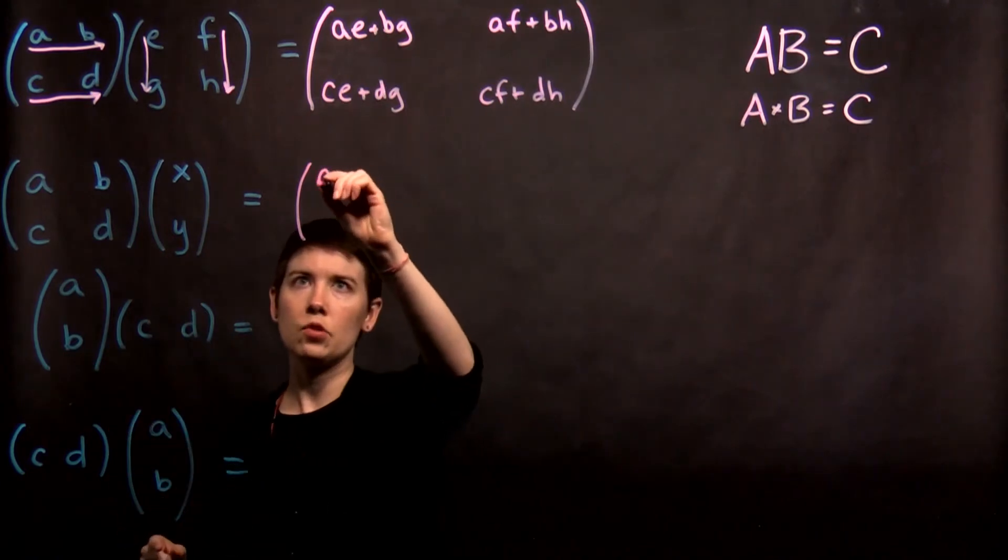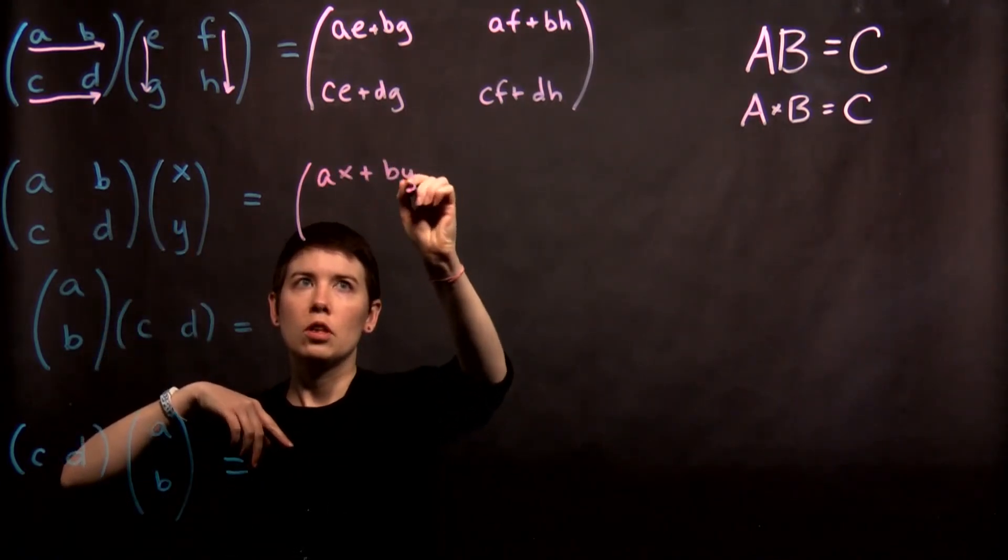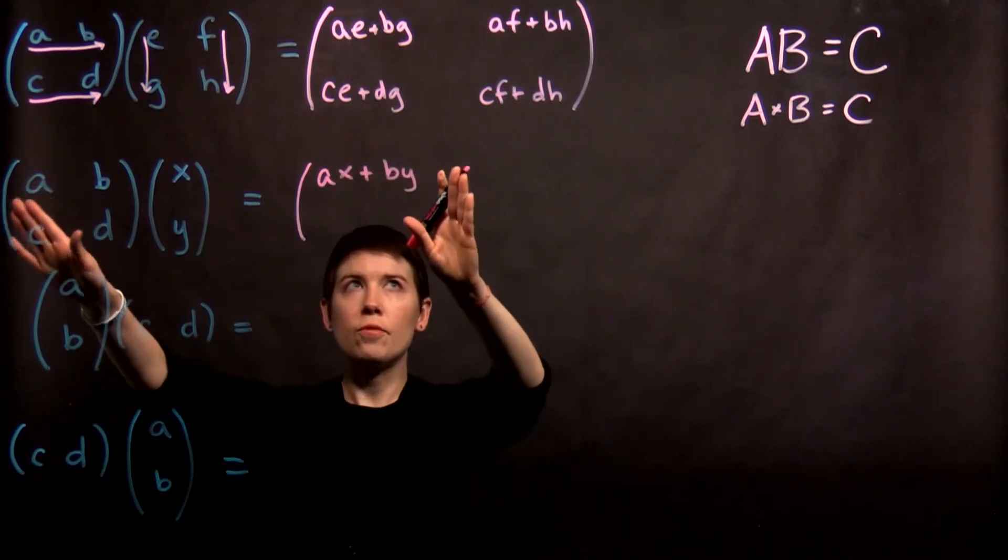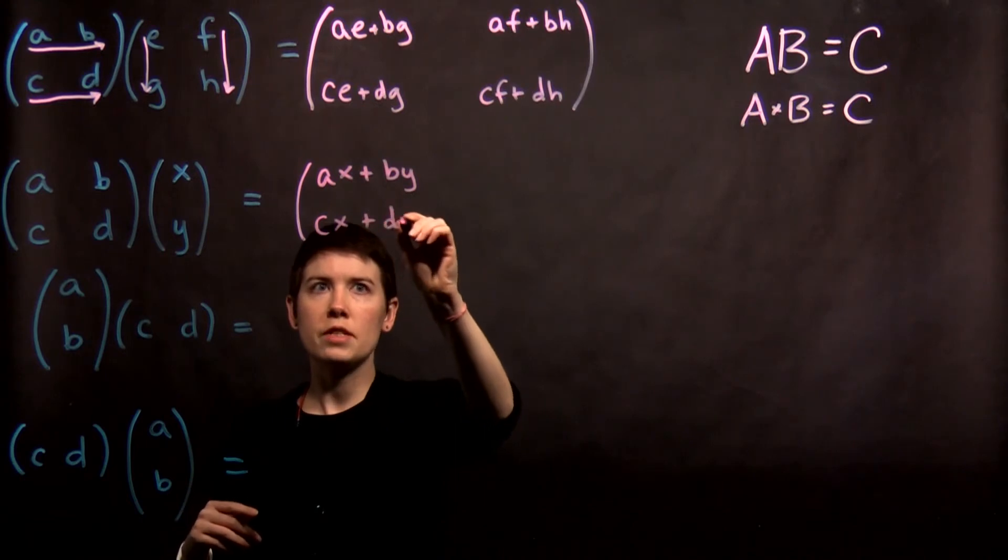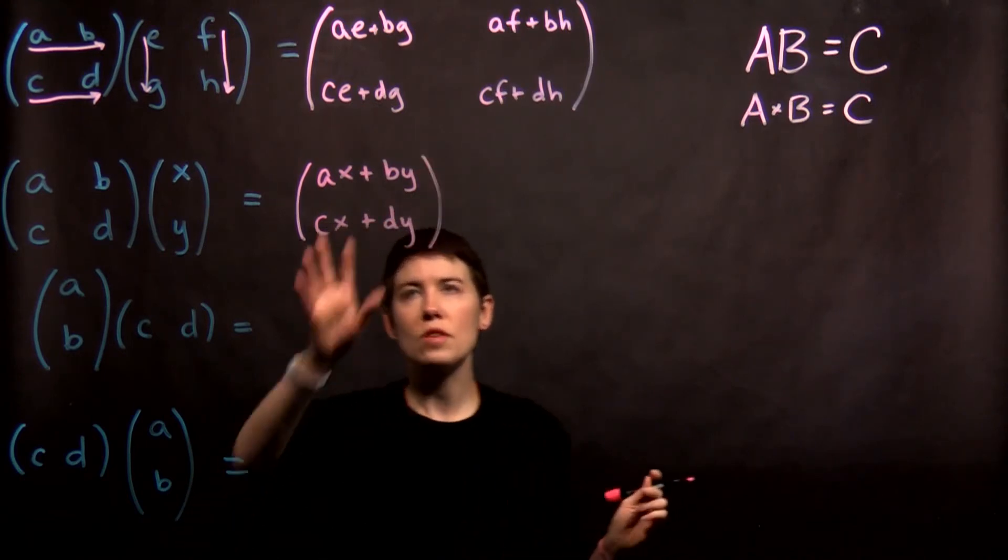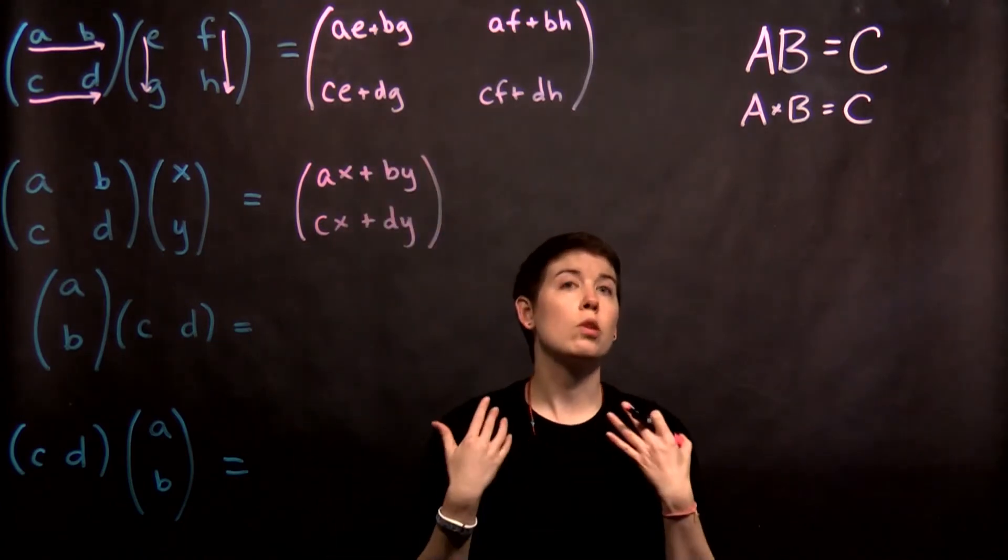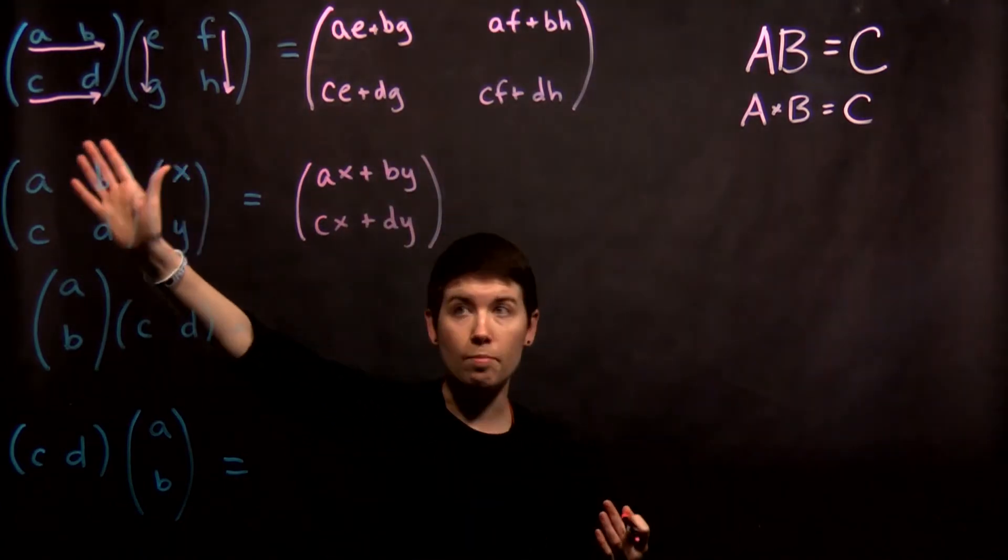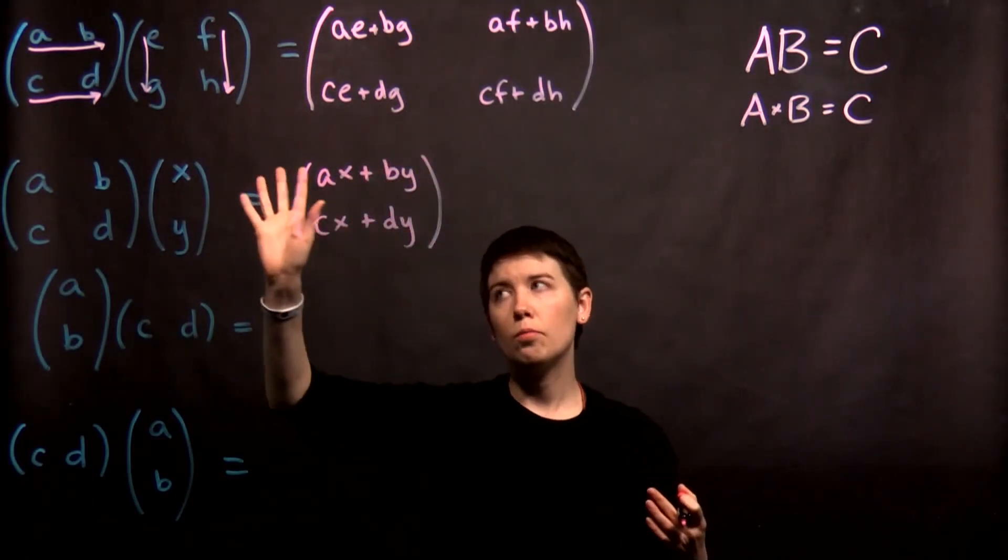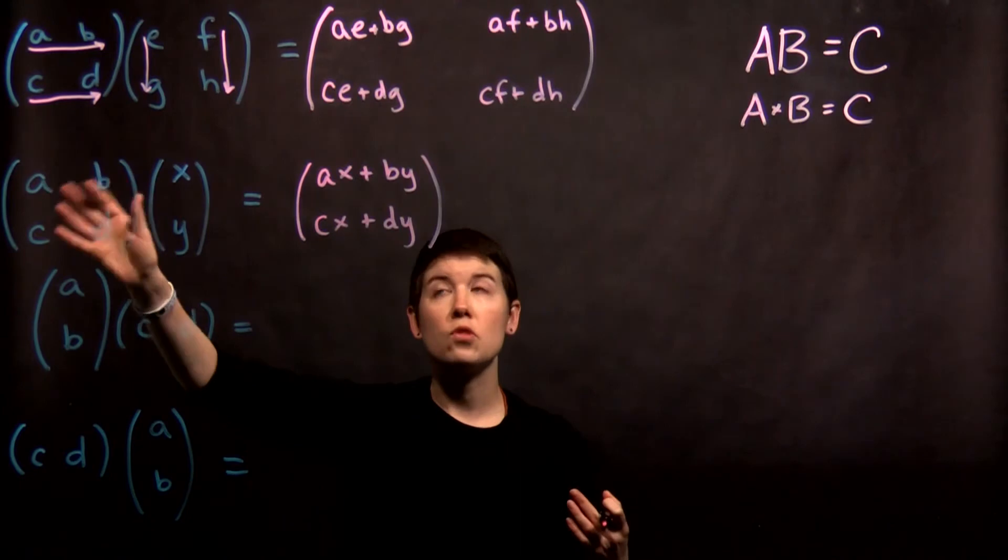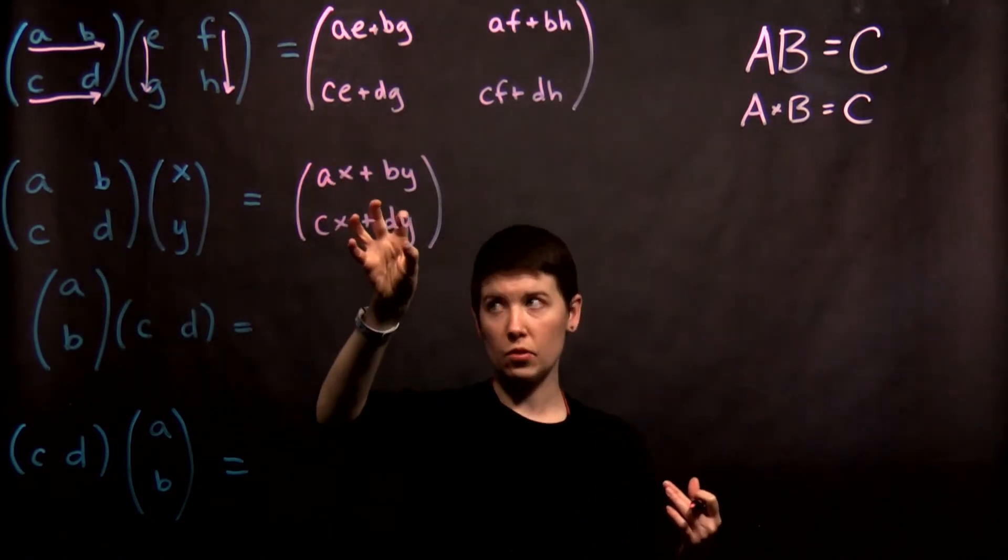We get a times x and then b times y. But then we don't actually have a second column to do. Down here we have c times x plus d times y. So notice that this is again going to give us a vector. So this is something we're going to see a lot in this class, where we have a matrix applied to a vector and we get back a vector. We're going to end up calling these operators.